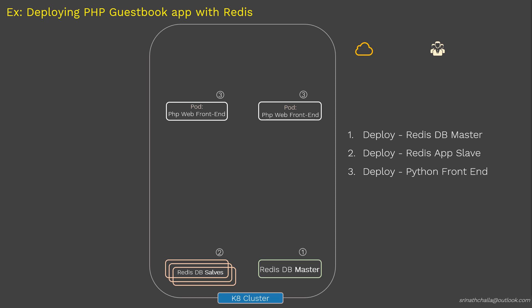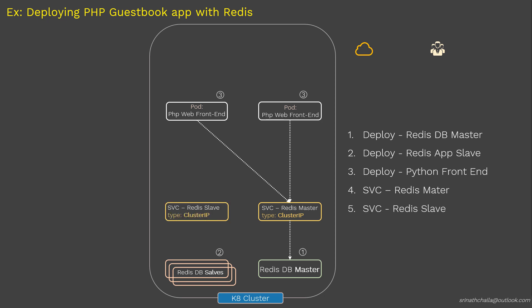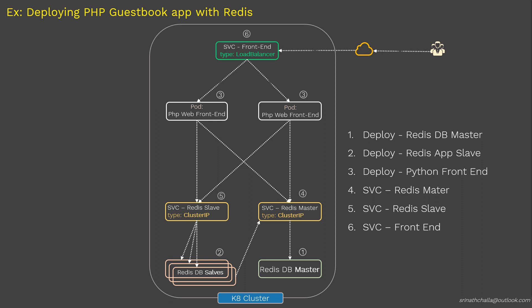The big question is how do we connect these components? The answer is services. The service type depends on the use case: to expose pods within the cluster — connecting the front-end web app to the back-end database — we need service type ClusterIP. To expose pods to the outside world, we need service type LoadBalancer. In total we need to create three services: one for Redis master, one for Redis slave, and one for the front-end pod.